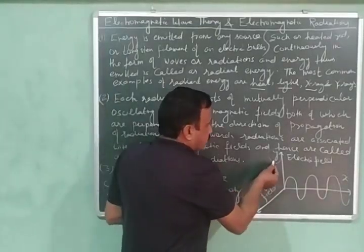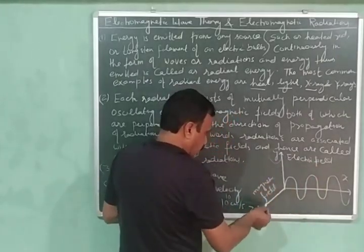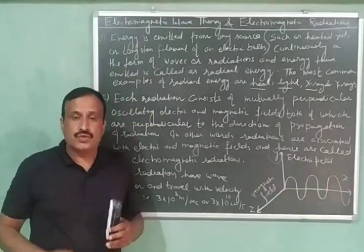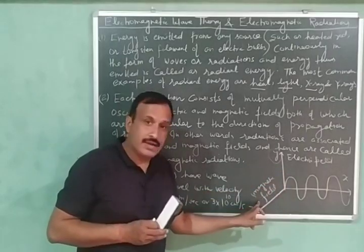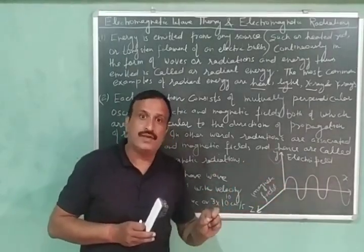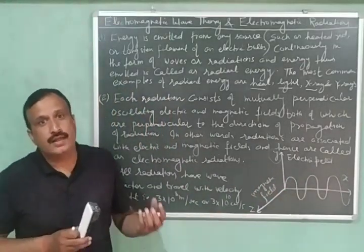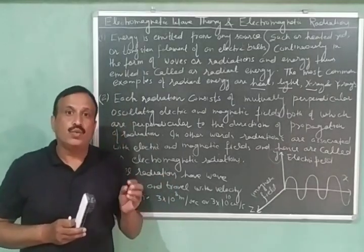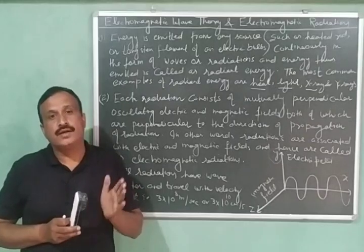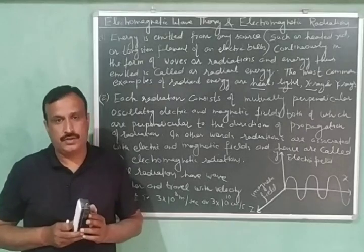Then, along y-axis, we will have oscillating electric field and along z-axis, we will have oscillating magnetic field. So, in this way, the electric field and magnetic field will be mutually perpendicular to each other as well as to the direction of the propagation of wave. So, we can say here that these radiations are associated with electric and magnetic field. So that's why these radiations are called as electromagnetic radiations.